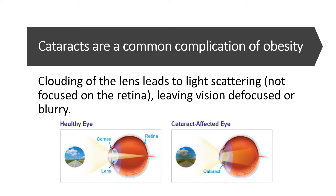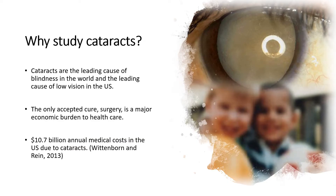Before we delve into our research, what is a cataract? A cataract is the clouding of the lens that leads to the scattering of light across the retina, which leads to blurred vision or even blindness. Cataracts are the leading cause of blindness throughout the world and the leading cause of low vision in the United States. Currently the only accepted cure is to surgically remove and replace said cataracts.